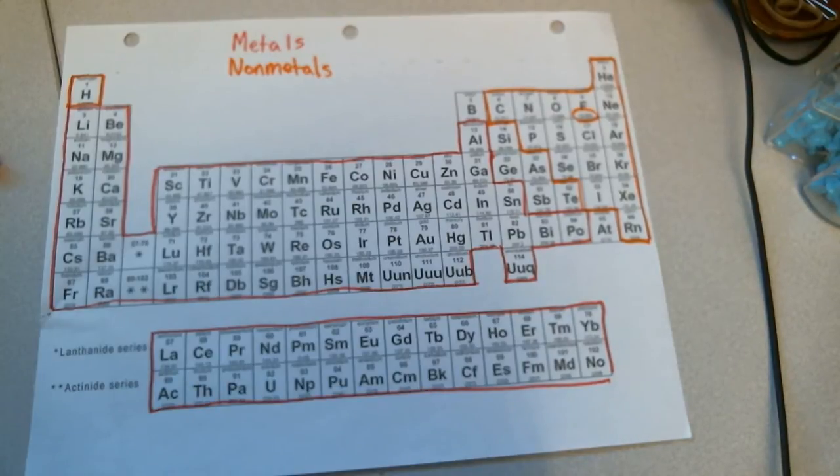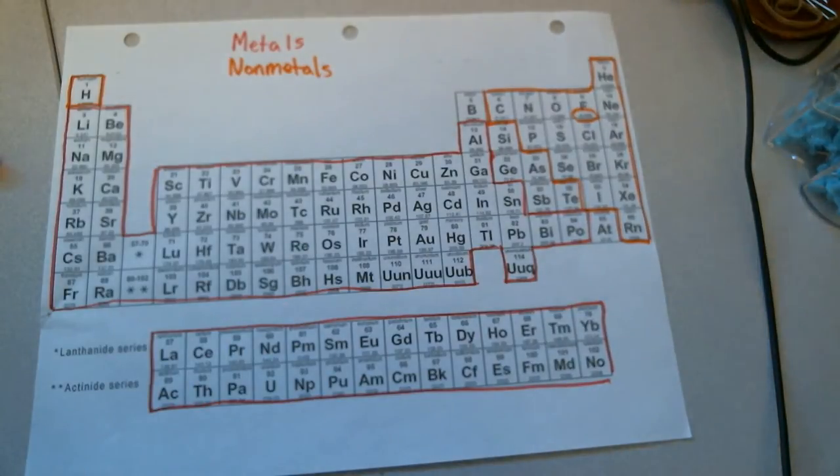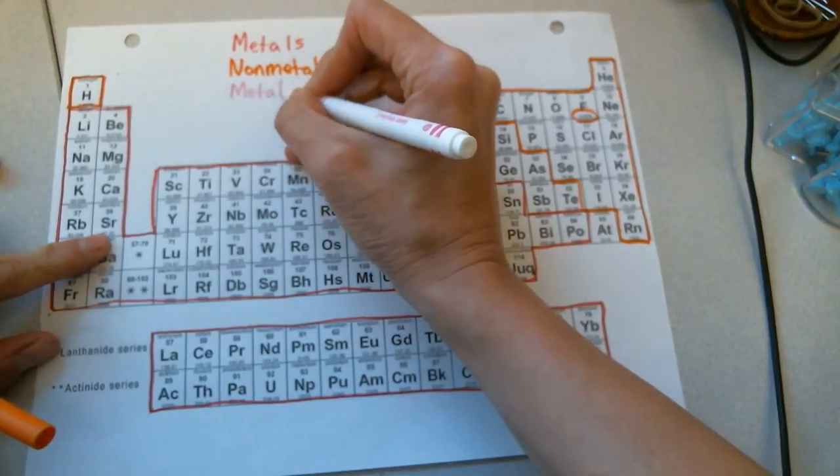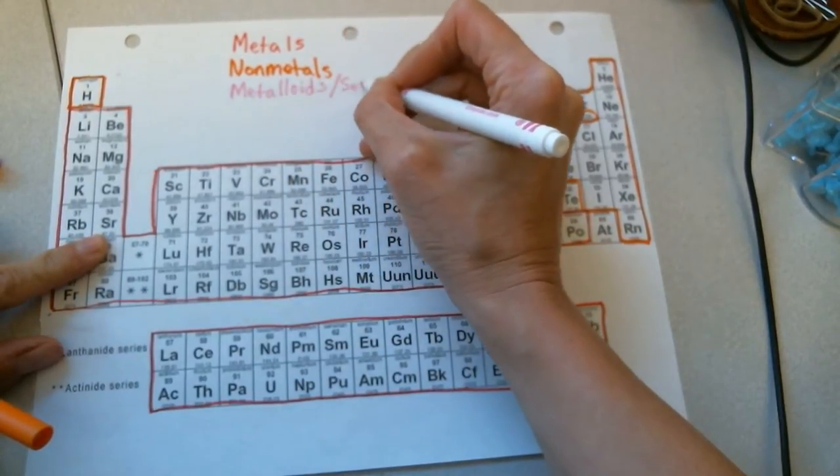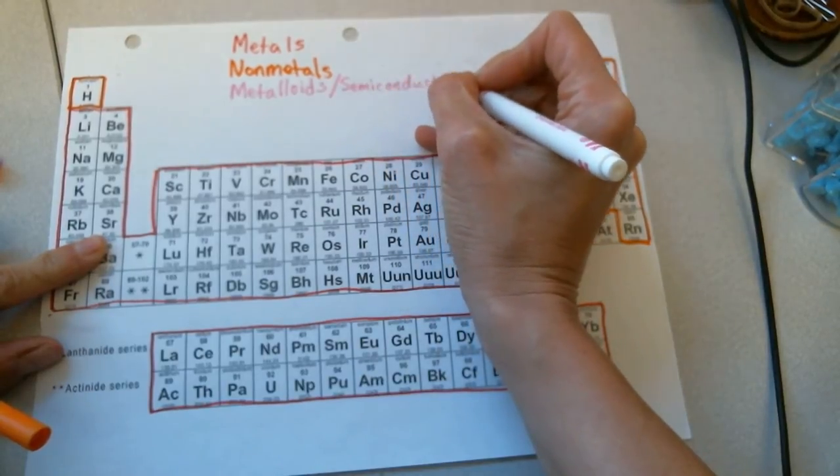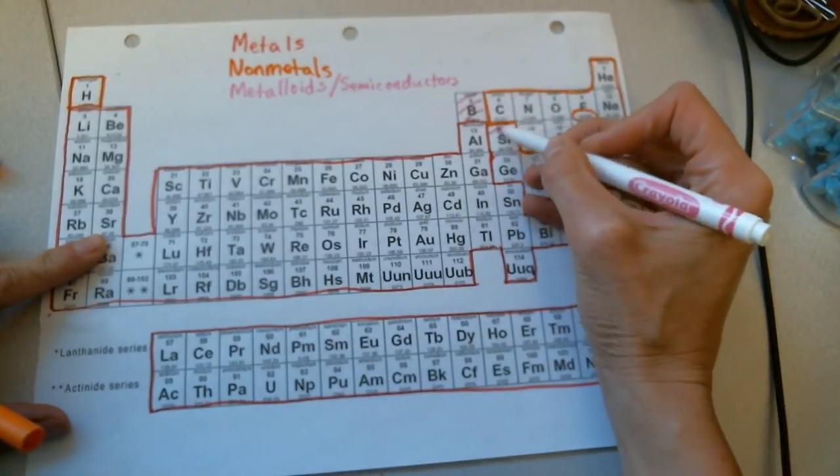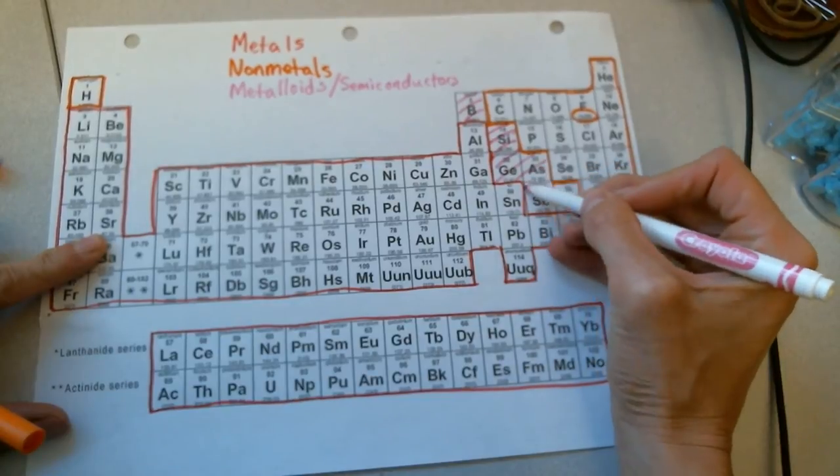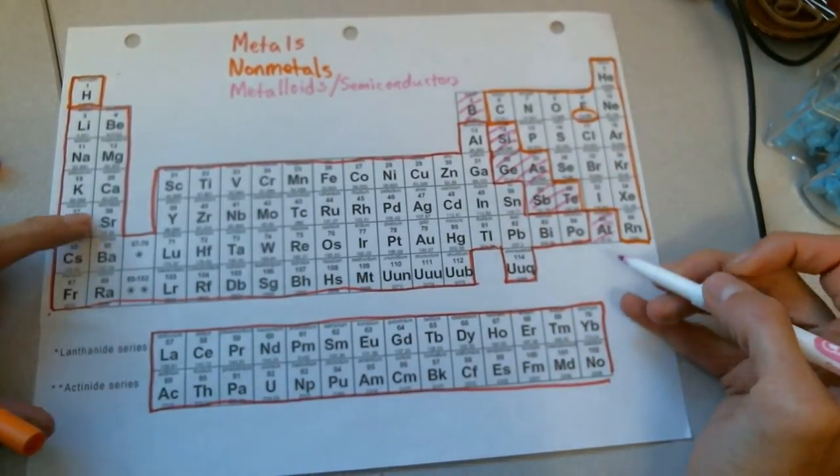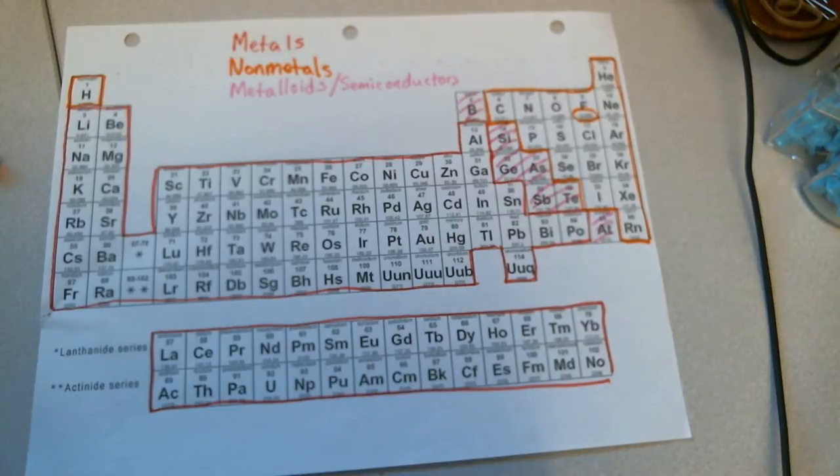Let's talk about these ones in the middle here. I'm going to make them pink. We're going to call them metalloids or semiconductors. These ones in the middle, I'm just going to make these a little more obvious for you by putting a zigzag across them. Those are called metalloids or semi-metals or semiconductors. What they do is they have some properties of metals and some properties of non-metals. They're very good for electronics because you can turn on and off their ability to conduct electricity.